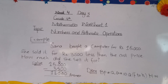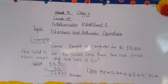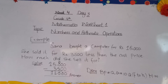So students, this means that the cost of the computer when she bought it was 15,000, and she sold it for 3,500 less than the cost price. How much did she sell it for? She sold it for 11,500.